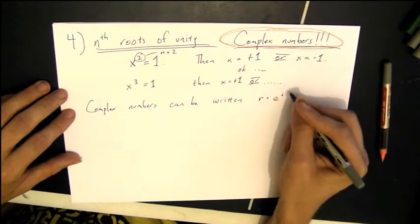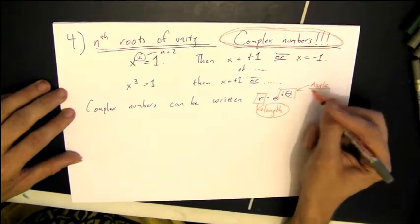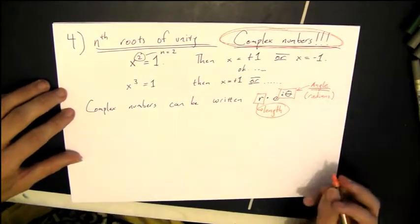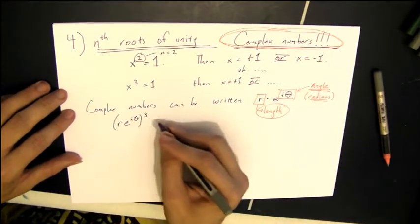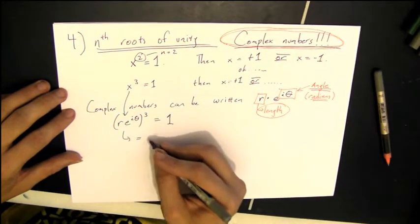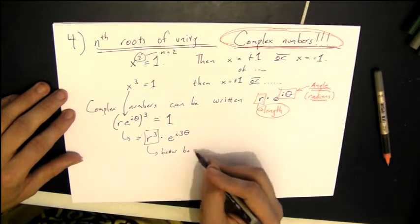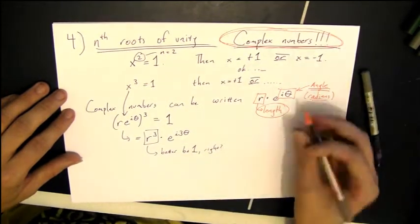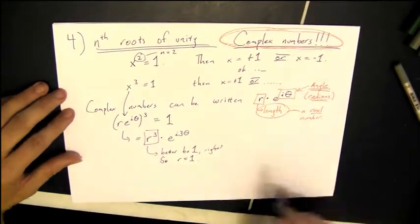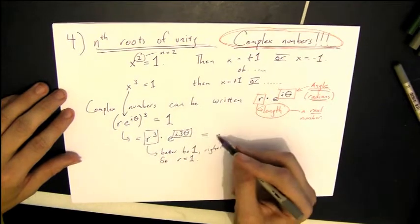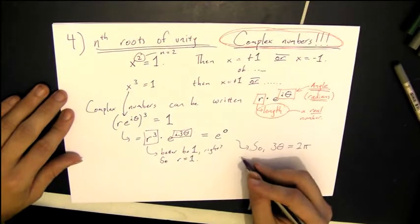So first, let's remember the complex numbers. You can always write them as a length times e to the i theta, r e to the i theta. This is called the polar form of the complex number. So if you take r e to the i theta cubed equal to 1, and that simplifies, you can distribute the cube, and you get r cubed times e to the i 3 theta. That r cubed better be 1 because we know that the size of 1 is 1. And that 3 theta is going to need to be equal to 0. So we need to solve 3 theta equals 2 pi. So theta is equal to 2 pi over 3.